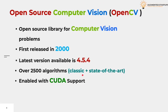Open Source Computer Vision, abbreviated as OpenCV, is one of the largest libraries designed to implement the mathematics of computer vision. It was initially released in 2000 and was upgraded over time with the latest functionalities. The most recent version available at the time of this recording is 4.5.4, which contains around 2,500 algorithms, both traditional and state of the art. OpenCV comes with support for CUDA, making it capable of running machine learning algorithms on its GPU.